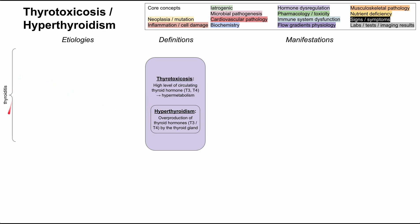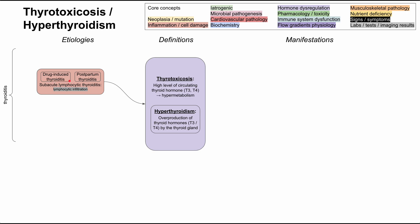The first group of etiologies are the thyroiditides — inflammation of the thyroid — and there are a couple flavors of thyroid inflammation. The first subtype is subacute lymphocytic thyroiditis, which on histology shows lymphocytic infiltration. The two main subtypes within this are drug-induced thyroiditis and postpartum thyroiditis.